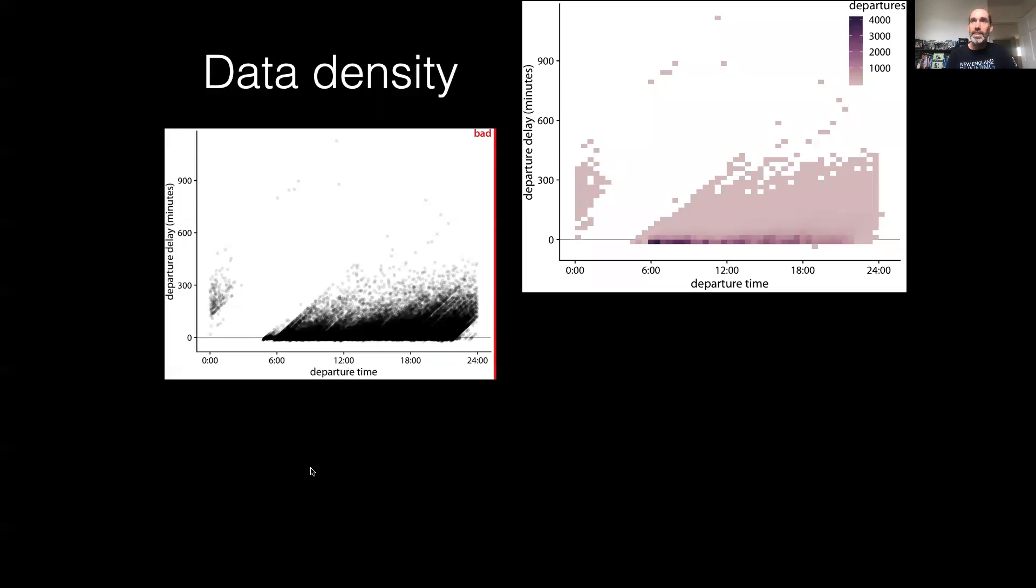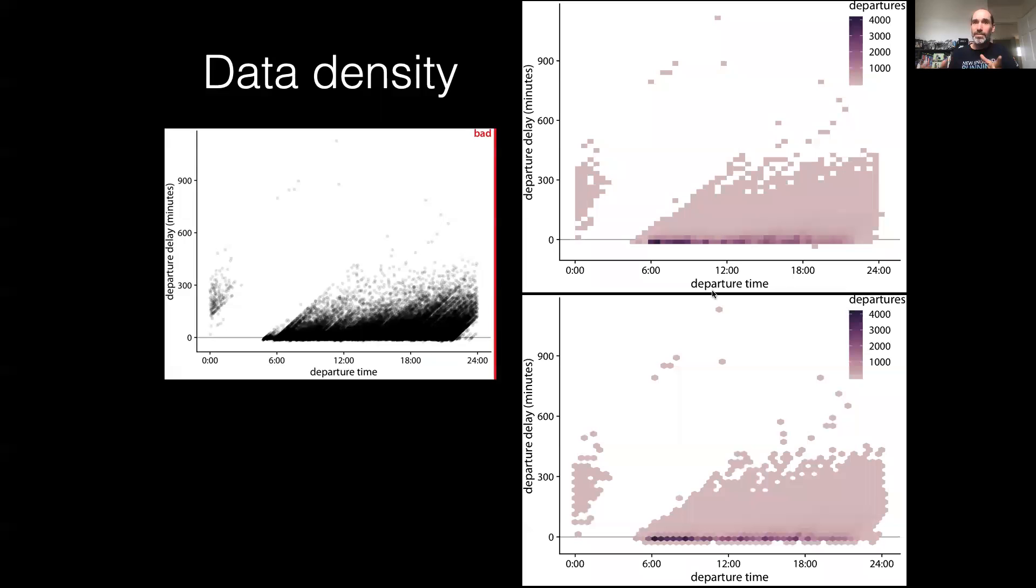One option is to do what's called a two-dimensional histogram where we bin the data both in the x and y directions and count up counts within those bins. You can see that this version using a square binning and this version using a hex binning show the same pattern as each other, but they show a remarkably different pattern from the original figure.